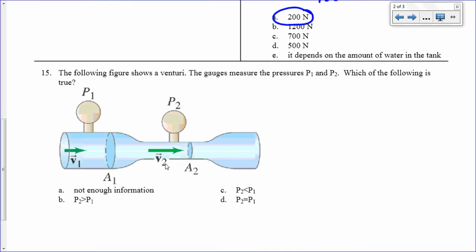The following figure shows a Venturi. The gauge measures P1 and P2. Which of the following is true? A couple things I need to know here. That my velocity, V1, is less than V2. That when this fluid goes into this smaller area pipe, that the velocity goes up. And then, if the velocity goes up, according to Bernoulli's principle, the pressure goes down. So, that means that the pressure at part 2 is less than the pressure at part 1. So, that's C is the answer for number 15.